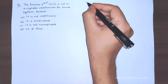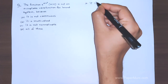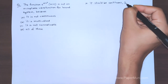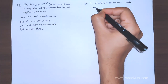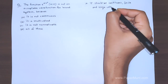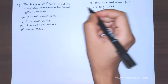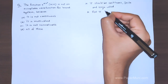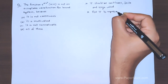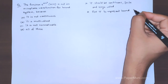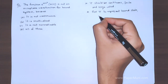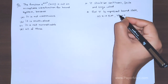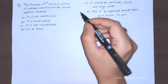First, let's recall the criteria we learned: ψ should be continuous, finite, and single-valued. Additionally, for a bound state system, as x tends to plus or minus infinity, ψ should tend to zero. These are the criteria which must be fulfilled for a wave function to be acceptable.